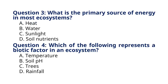Question 3. What is the primary source of energy in most ecosystems? A. Heat. B. Water. C. Sunlight. D. Soil nutrients. The correct answer to question 3 is option C, Sunlight. Explanation: Sunlight is the primary source of energy in ecosystems as it drives photosynthesis, which converts light energy into chemical energy stored in the bonds of organic molecules.